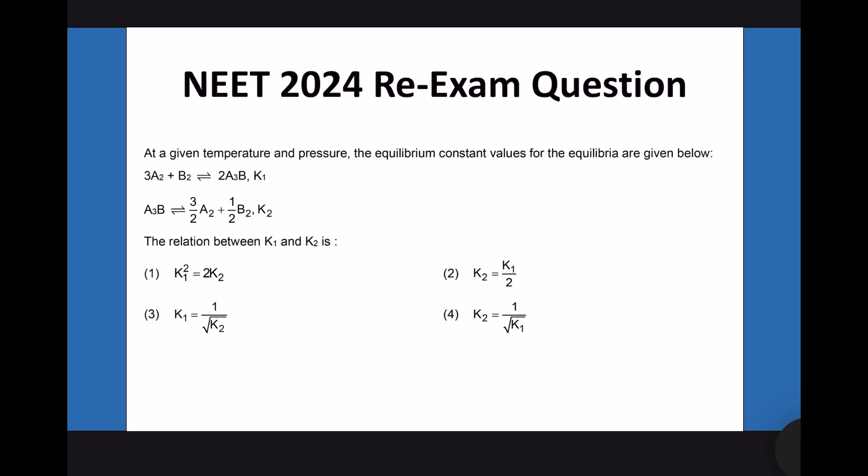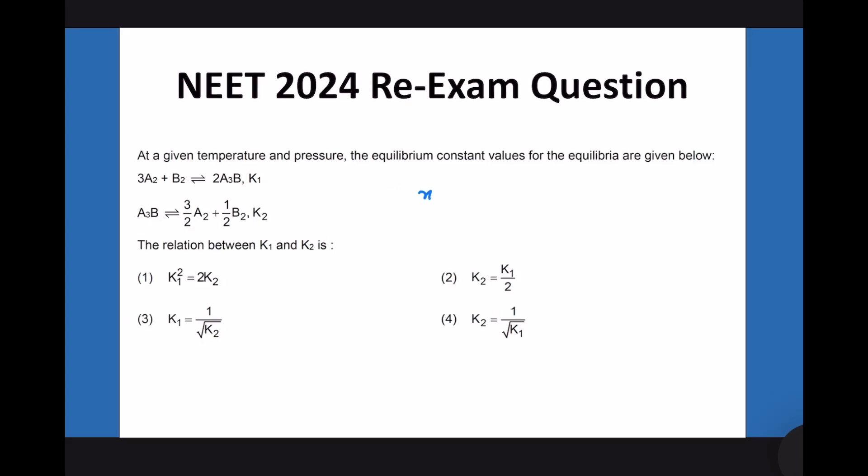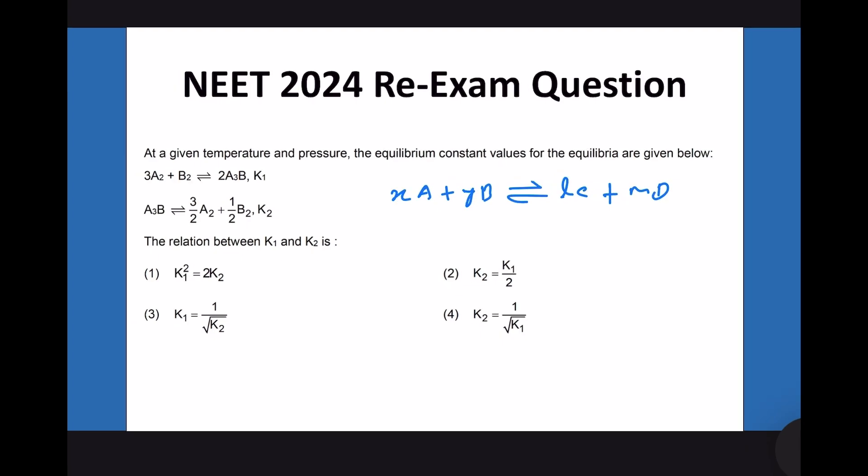Let us say if we have a reaction like this: x times a plus y times b that is in equilibrium with l times c plus m times d. How will you write the equilibrium constant?